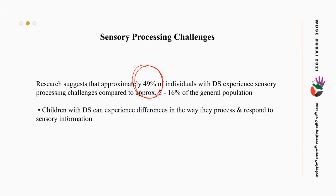For example, if a child wants to dress his jacket and he has a problem with proprioception and vestibular, he doesn't know where his position is — where his hand is in space. This also affects his bilateral motor coordination, so he doesn't know how to pull the two sides of the jacket to wear it. So it affects all his daily life skills, especially independence. Children with Down syndrome can experience differences in the way they process and respond to sensory information.